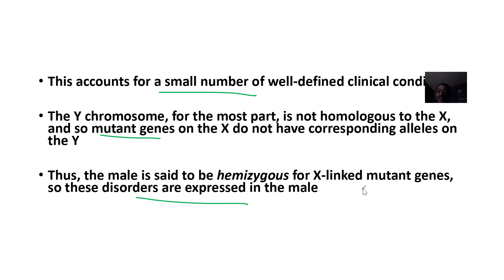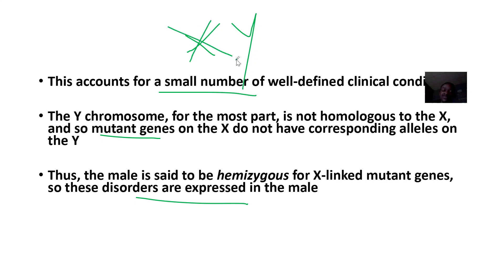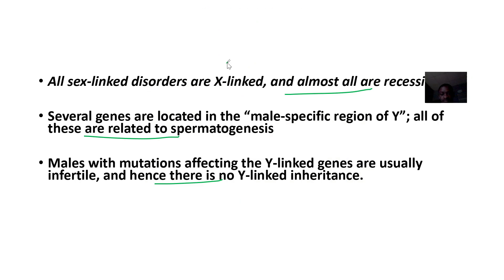Thus, the male is said to be hemizygous for x-linked mutant genes, and these disorders are expressed in males because the male has only XY — one X and one Y. Once that single X is affected, that's all it takes, which is why males are usually affected. For females to be affected by an x-linked condition, both of their X chromosomes need to be affected.